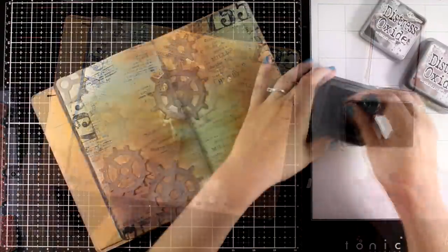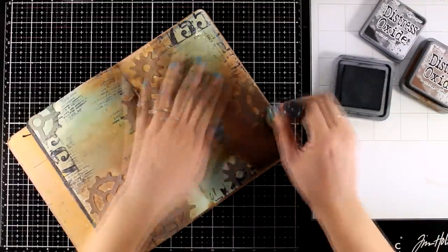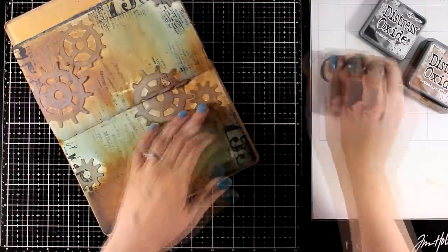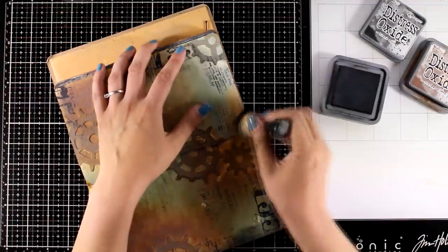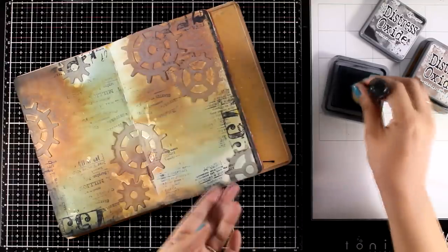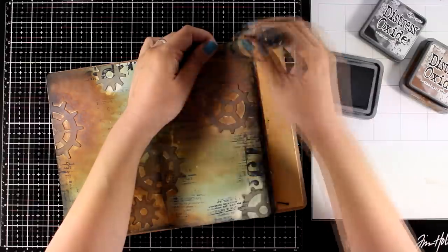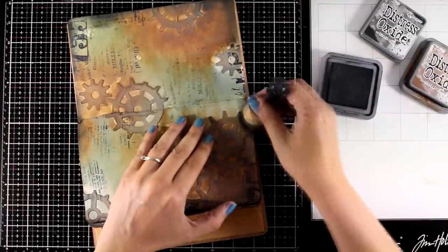I also like to have darker edges. This is another technique, a go-to technique for me. So I'm using black soot and I'm going all around with my blending tool, darkening up the edges. This is going to bring the eye more towards the center of my page and it looks more finished.